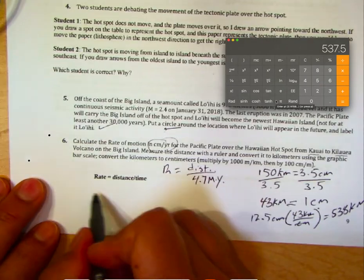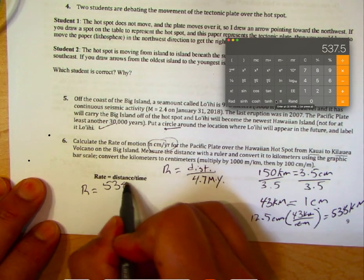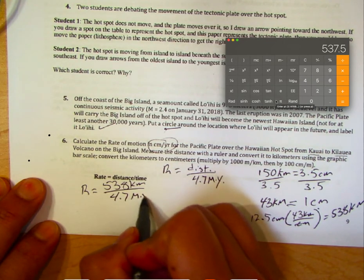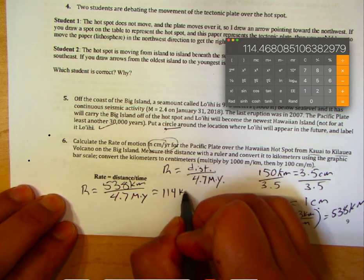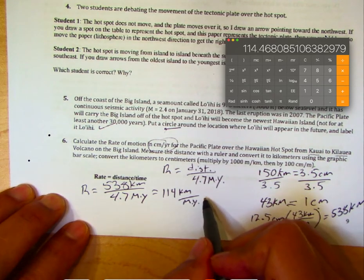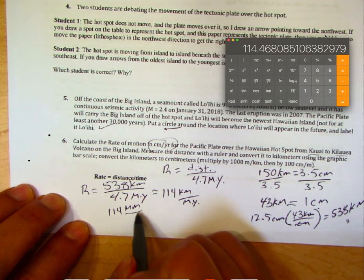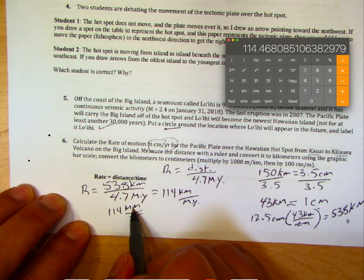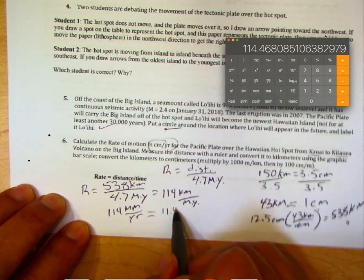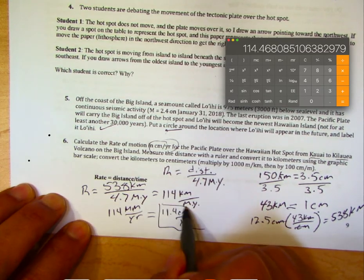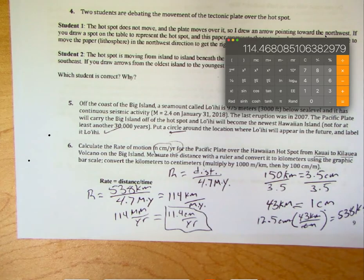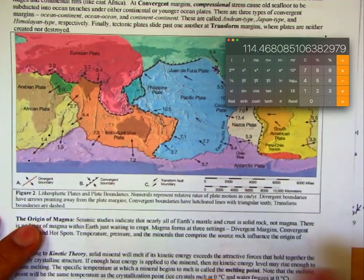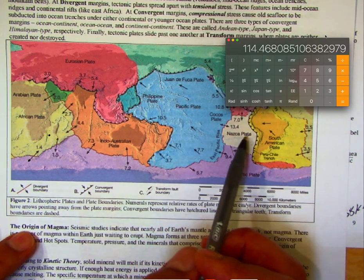So the rate is 538 kilometers divided by 4.7 million years, which equals 114 kilometers per million years. That's the same as 114 millimeters per year, or 11.4 centimeters per year. Looking at Pacific plate rates on the diagram — 10, 11, 13.4, 10.8 centimeters per year — our answer is right in that ballpark.